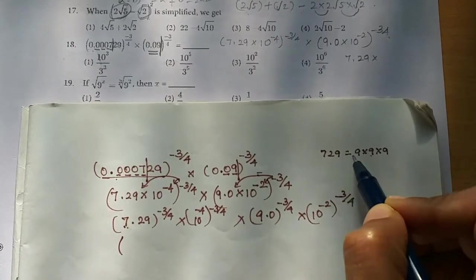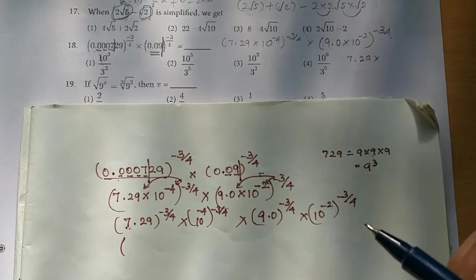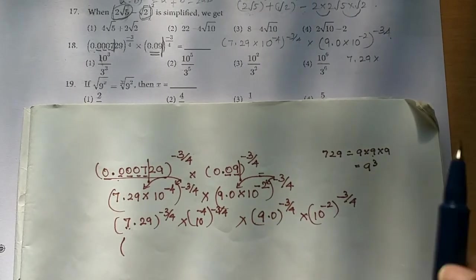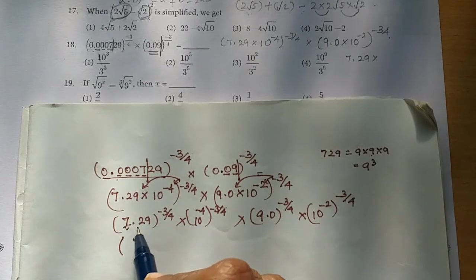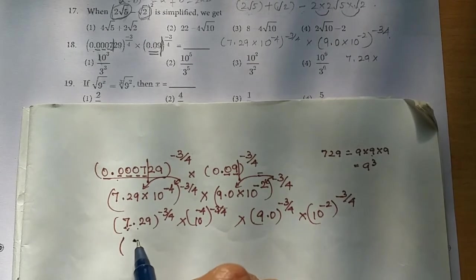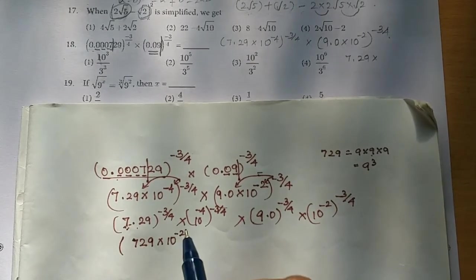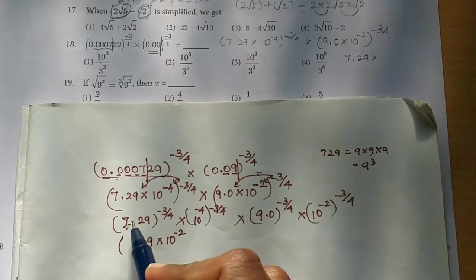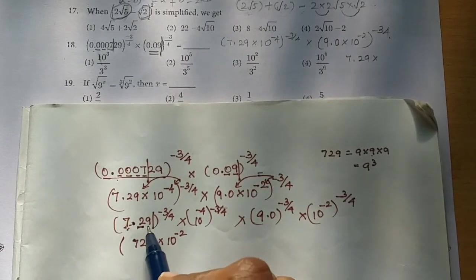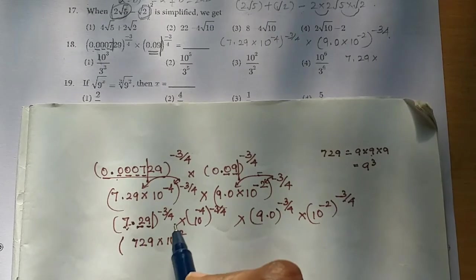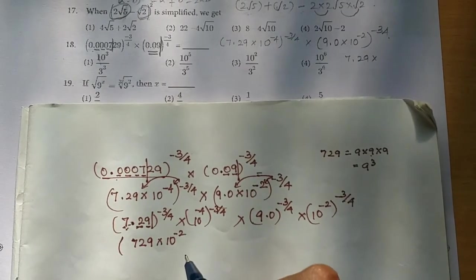So 81 into 9 is 7.29, which is 9 cubed. So this is going to be 9 cubed. So 7.29 is 7.29 into 10 power minus 2. The point for 9 cubed — that is going to move right hand side. So that is 10 power minus 2.